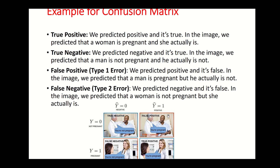False positive means the positive is false — you are looking at a person and saying they are pregnant, which is not possible. That is false positive: the positivity you are claiming is wrong. False negative means you are telling a pregnant person that they are not pregnant — you are saying it is negative, which is false.